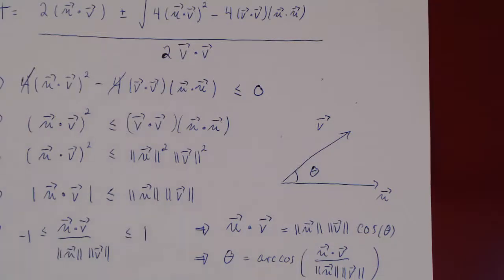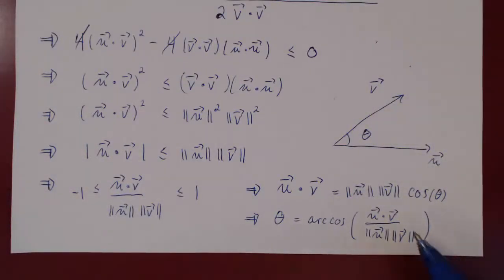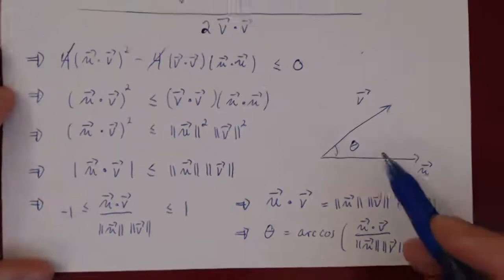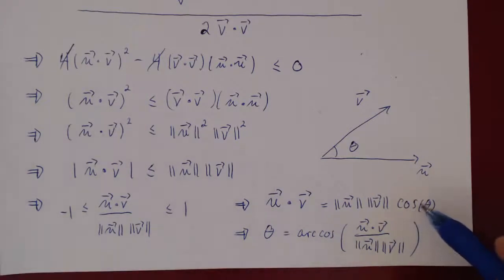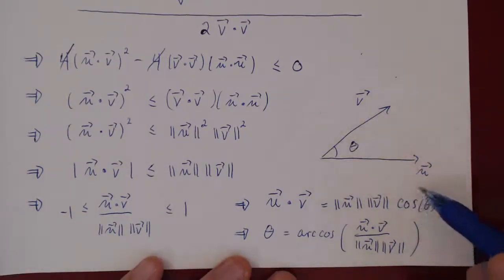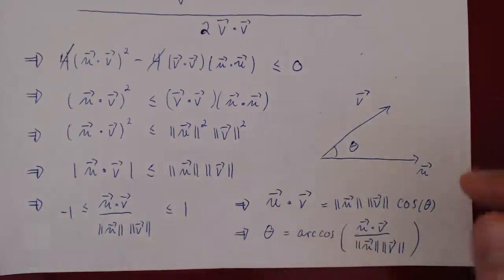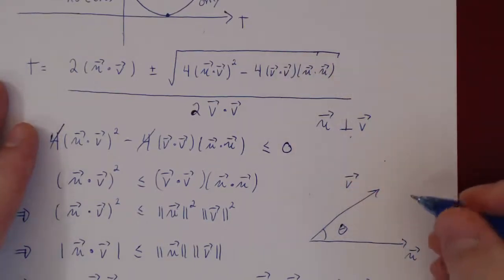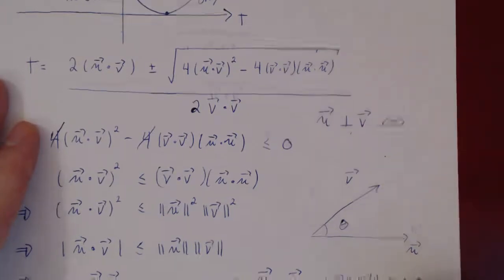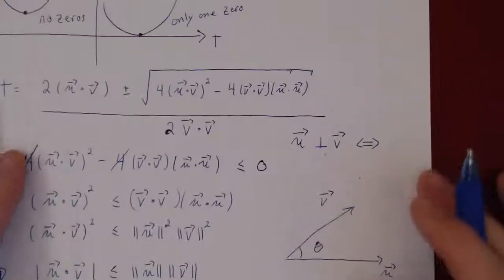There is one last nice consequence. If you have two vectors in, say, R⁷ and ask whether they are perpendicular: two vectors are perpendicular if the angle between them is π/2, but cos(π/2) = 0, therefore u · v = 0. So two vectors u and v in Rⁿ are perpendicular to each other if and only if their dot product equals zero — exactly as in R² and R³.